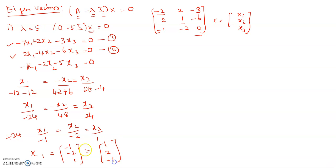Therefore, the first eigenvector is x1 equals (minus 1, minus 2, 1). You can multiply throughout by minus 1 to rewrite this as (1, 2, minus 1). Both are correct. This is the first eigenvector for lambda equals 5.